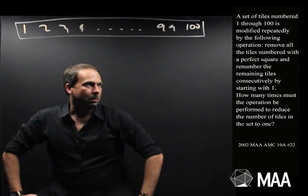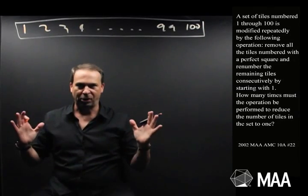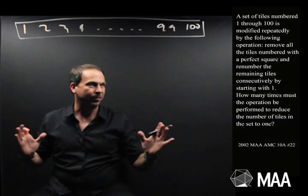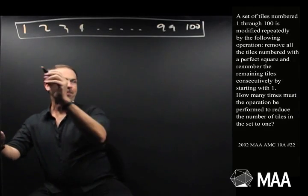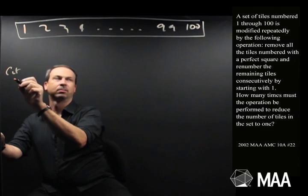What are we doing? We repeatedly do an operation and the operation is remove all the tiles with a perfect square number. So step 1 is cut out the tiles with a perfect square number.